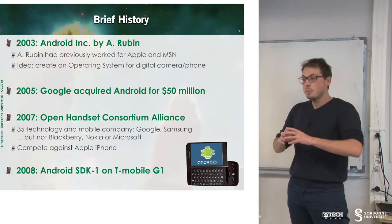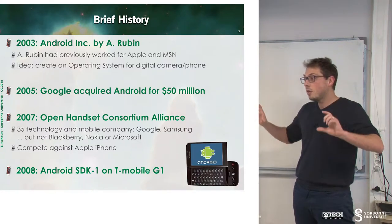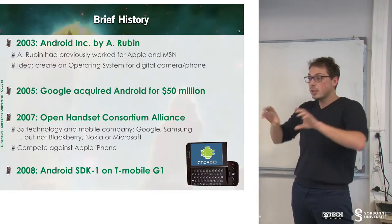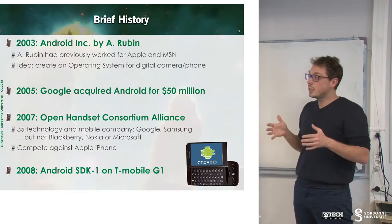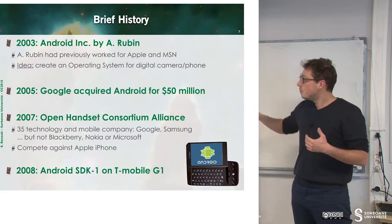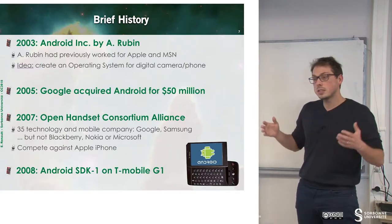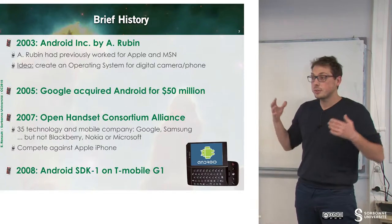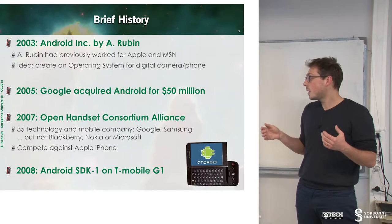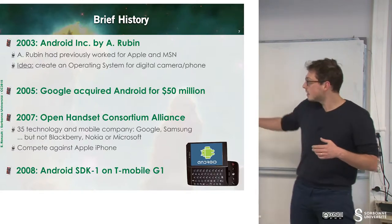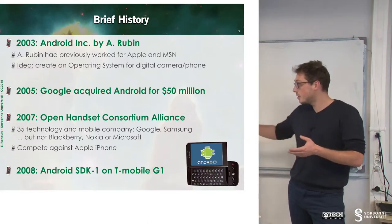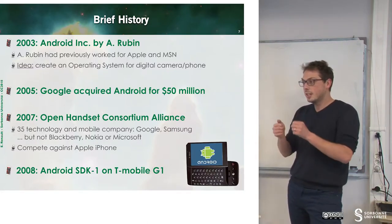The idea was to build the operating system, and over this operating system each company can build its own framework and visual interface to have a dedicated user experience. From 2007 to 2008 they worked, and finally they released the first Android phone — Android SDK 1 on T-Mobile G1. We can observe that there is no multi-touch; it's just physical touches.